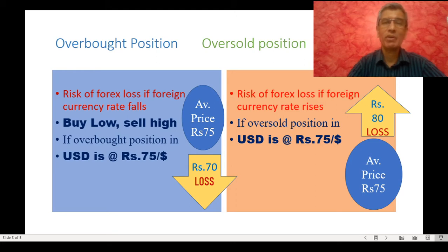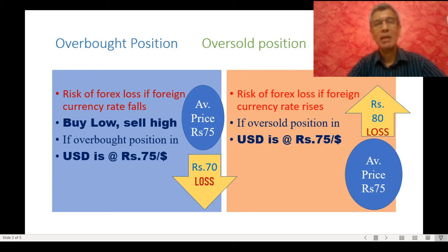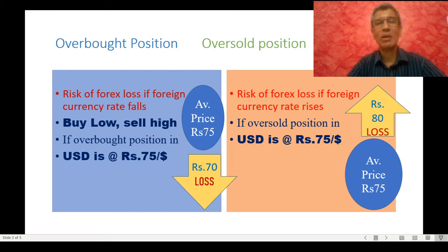Let us take the example of an oversold or short position. Assume the authorized dealer has an oversold position at 75 rupees to a dollar. If the foreign currency rates subsequently go up and the US dollar quotes at 80 rupees to a dollar, then it will have to buy at the higher rate of 80 rupees, whereas it had sold at an average price of 75 rupees. The authorized dealer will be exposed to a foreign currency loss of 5 rupees per dollar.